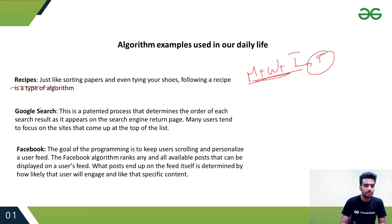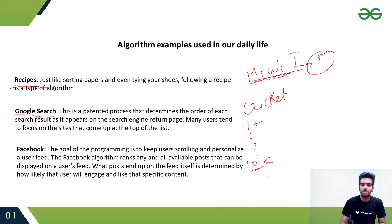The second example is Google Search. Whatever you search in Google — for example, if you search 'cricket' — you get a number of links: first, second, third, fourth, and so on. How is it decided which link appears in first position and which in tenth position? To decide this, Google uses an Algorithm.